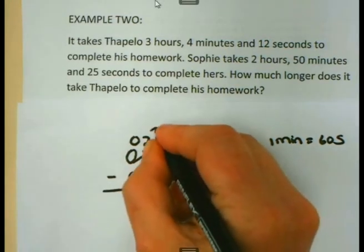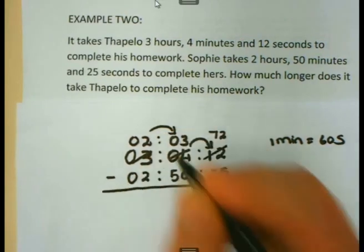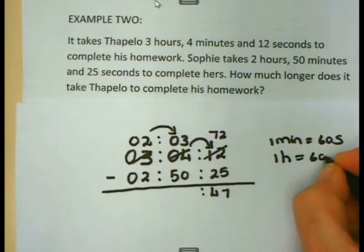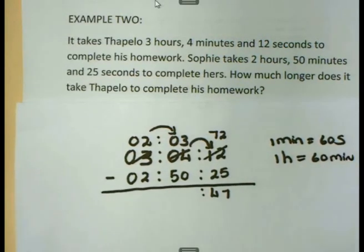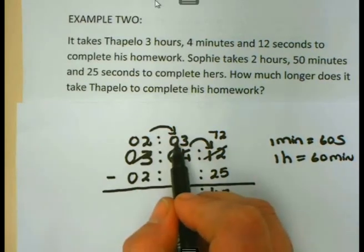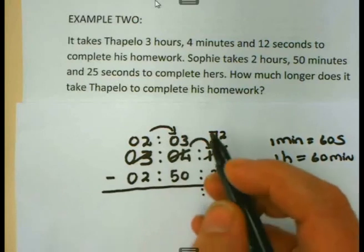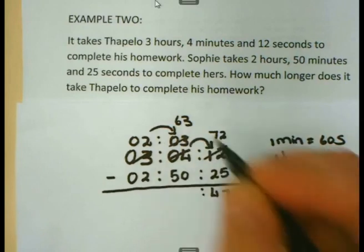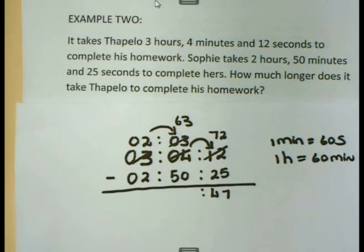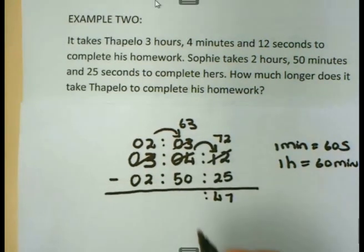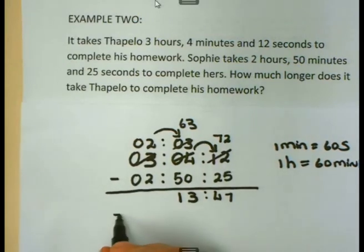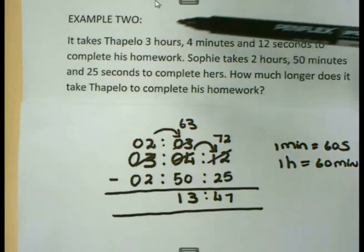When I take my hours over to minutes, it is very important that you must remember that 1 hour is the same as 60 minutes. So what I take over in fact is 60 minutes. But I already have 3 minutes here. So this 3 minutes now becomes 60 plus 3, 63 minutes. If I subtract now the 50 from the 63, I can say 0 from 3 is 3, 5 from 6 is 1.